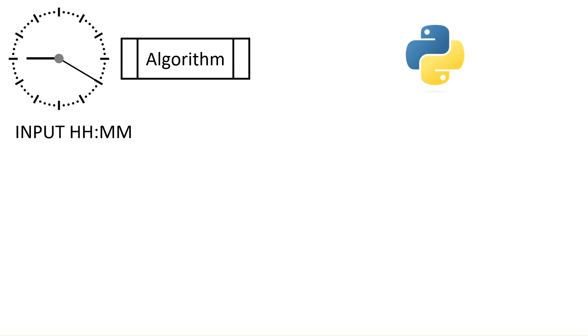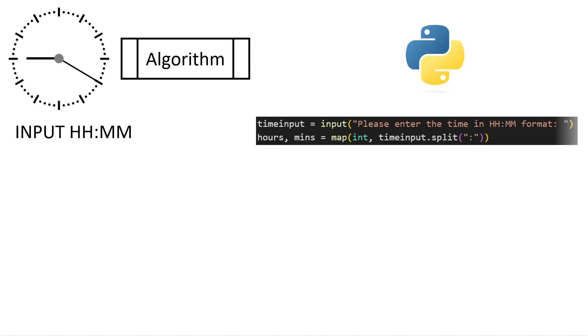First, we need to collect our input time in the hour-minute format, to accept times like 5:30 and also 24-hour times like 17:30. In Python, we can do this by accepting our input as a string, and then using the map function, assign the first half of the string before the colon to hours, and the other half to minutes, both cast to integers.